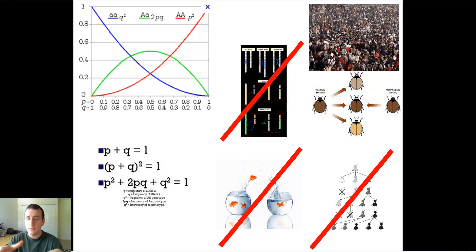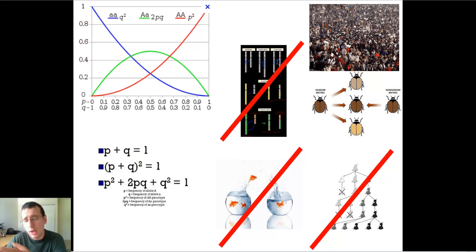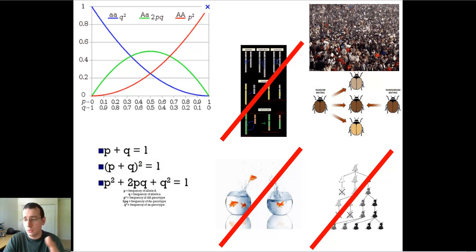If you have no mutations, you have no new genes to work with to create more variation. You also have no selection, so you have no changes across generations. If you have no migration, you have no influx or outflux of genes to change the composition of a population. So if you take all those things away, basically you have no evolution — you have instead equilibrium in the population.